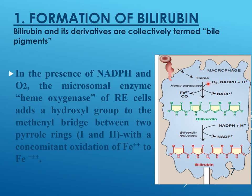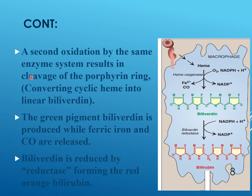In the first stage of oxidation, an OH group is added to the methanol bridge of pyrroles 1 and 2, with concomitant oxidation of ferrous iron to the ferric form. A second oxidation by the same enzyme results in cleavage of the porphyrin ring, producing linear biliverdin. Iron is released and stored as ferritin, while carbon monoxide is released and performs biological functions as a signaling molecule or vasodilator.